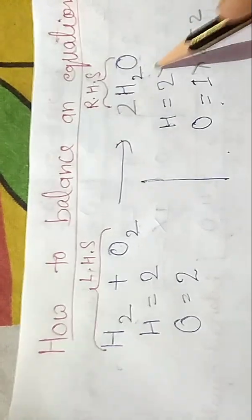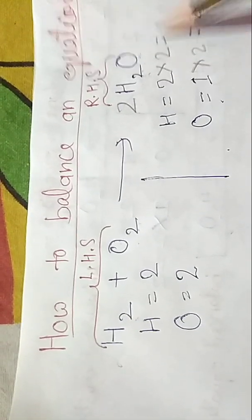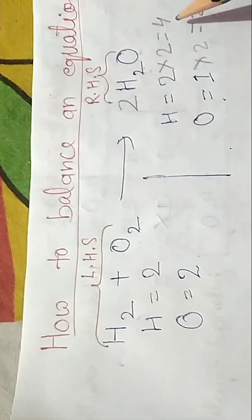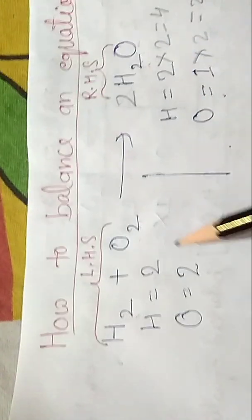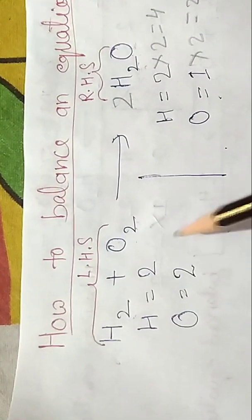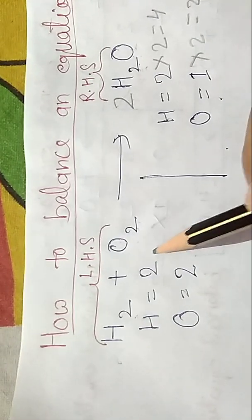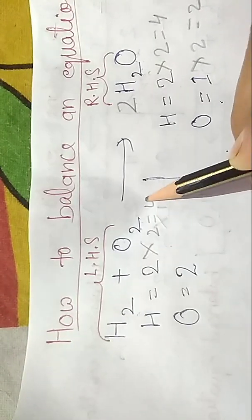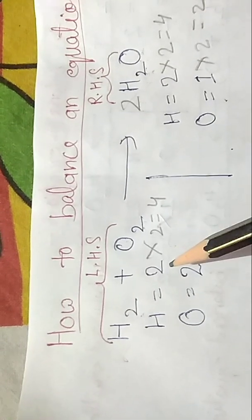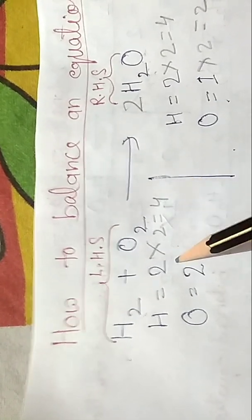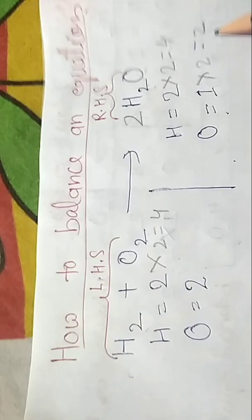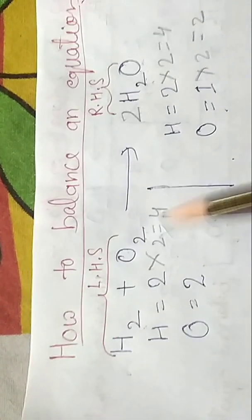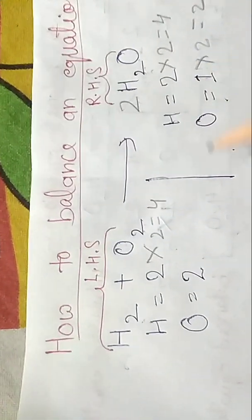But here you can see 2 is with H also, so two times two equals four. Here hydrogen atoms become four but here is two, so we have to maintain here also. We have to multiply 2 here and it becomes four.